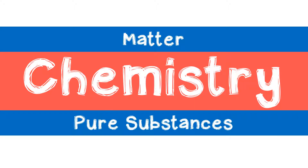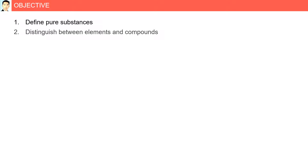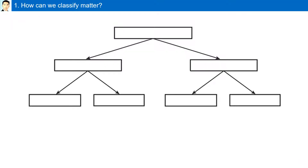Pure substances objectives: define pure substances, distinguish between elements and compounds, use symbols to represent elements and compounds, identify elements that exist as atomic molecules, and draw particle diagrams of elements and compounds.